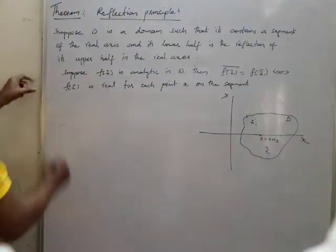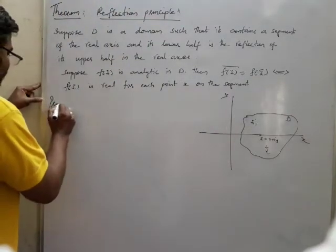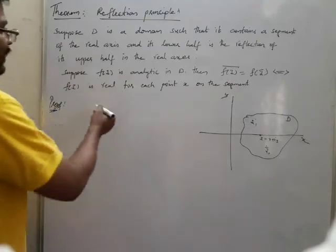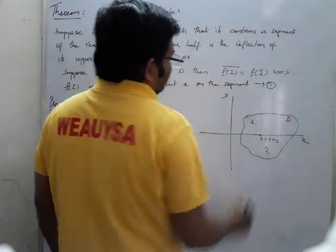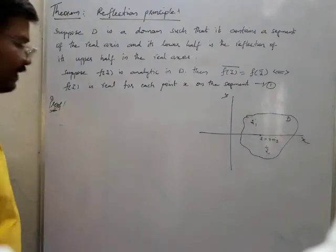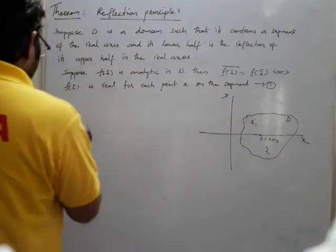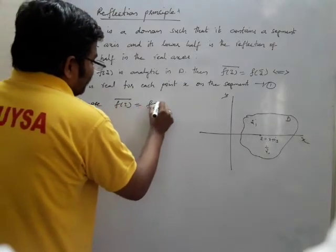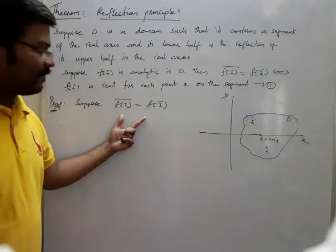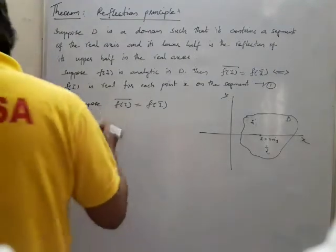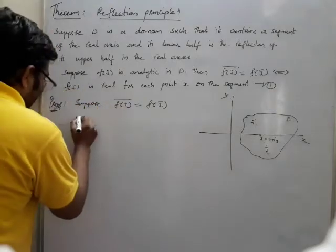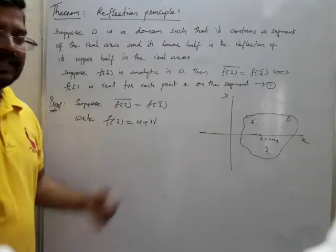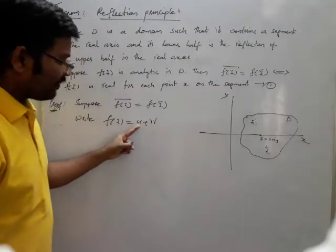Now the proof. We will prove this in two directions. First, take the statement as equation number one. Suppose f(z̄) = overline{f(z)}. We write f(z) = u + iv, so f(z) = u(x, y) + iv(x, y).